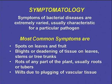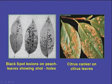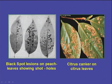The most common symptoms we see in plants are spots on the leaves and fruit, blights or deadening of tissues on leaves, stems, or tree trunks, rots of many parts of the plant usually root or tubers, and wilts due to plugging of vascular tissues. Here I am showing the black spot lesion on peach leaves showing shot holes — these are the holes caused by bacterial infection in the plants, and it is now used for studying plant resistance.